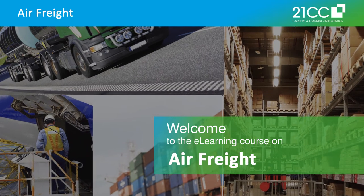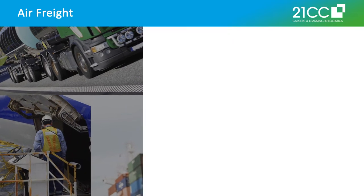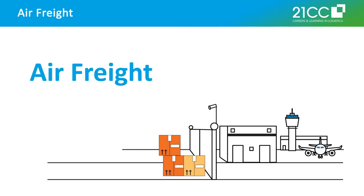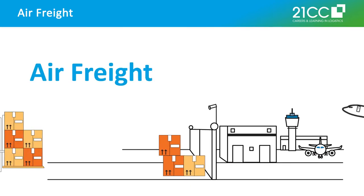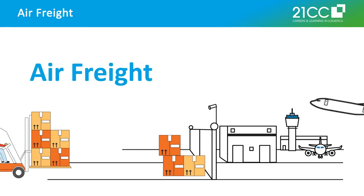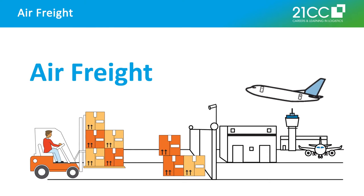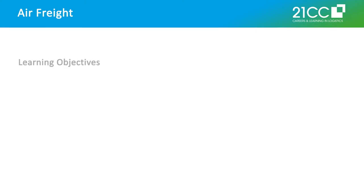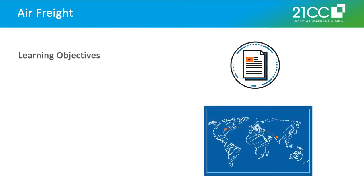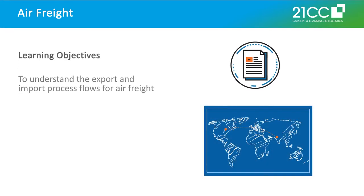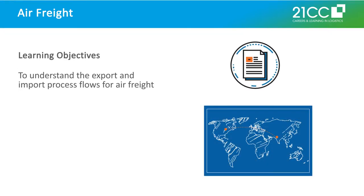Welcome to Freight Forwarding 101 Air Freight. Air freight involves the shipment of packages and goods via an air carrier. The goal of this module is to understand the export and import process flows for air freight in detail and to learn about the export and import documentation needed for air freight.